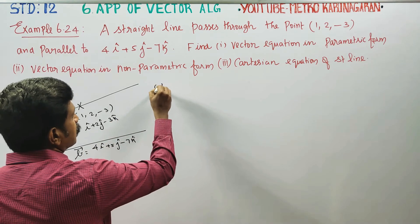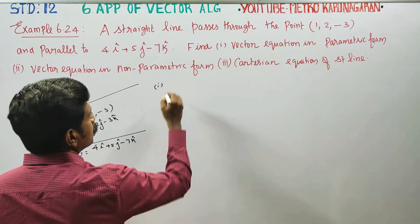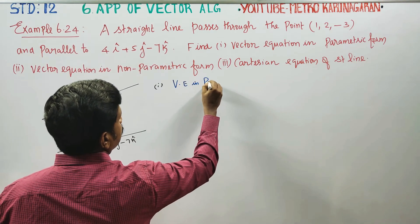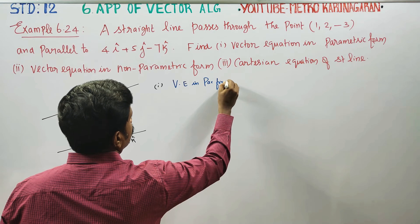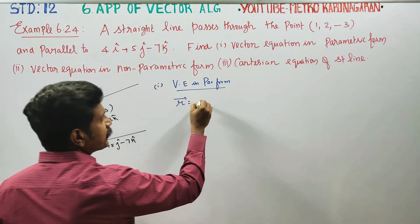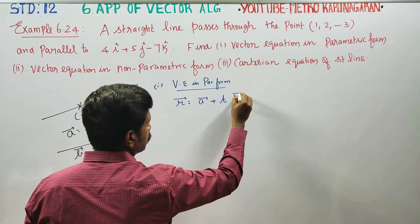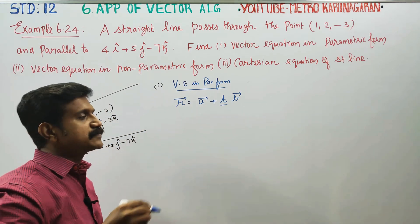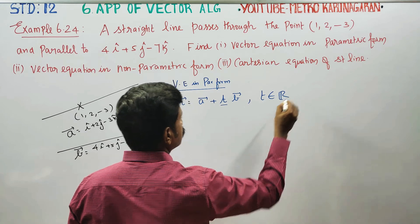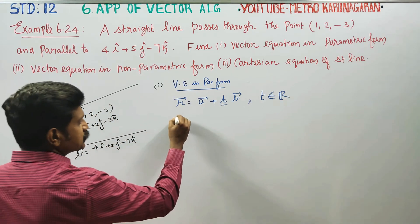This is the vector equation in parametric form. In parametric form, one extra letter (parameter) is included. The formula is: r vector = a vector + t × b vector, where t is the parameter and t belongs to the real numbers.